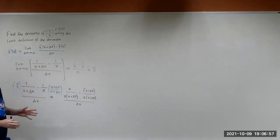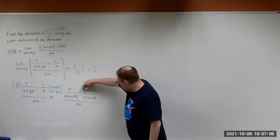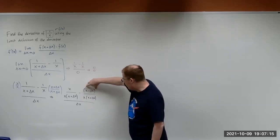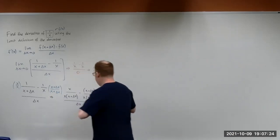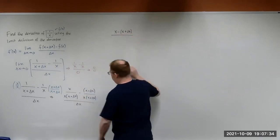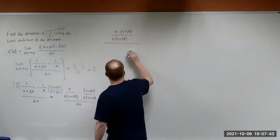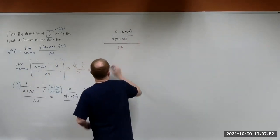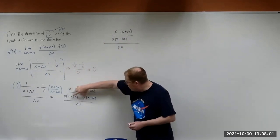Rewriting this, we get x over x times x plus delta x, minus x plus delta x over x times x plus delta x, all divided by delta x. You have to be extremely careful — make sure you put parentheses around x plus delta x in the numerator. If you don't, you're going to have minus x and not have a negative on the delta x. So always write it out with parentheses.